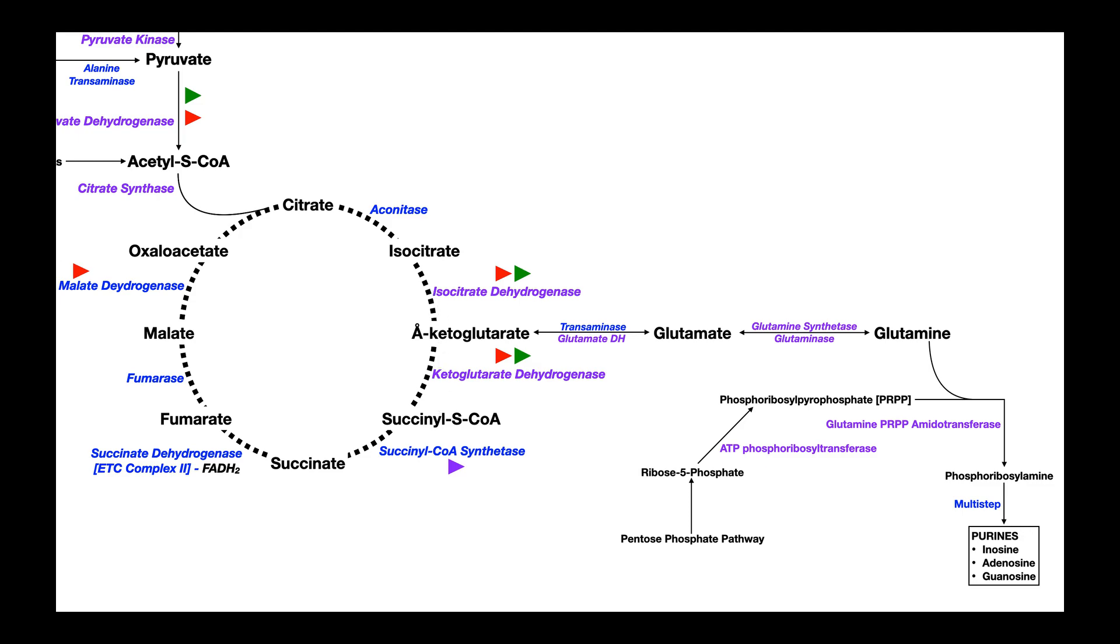Now let's look at pyrimidine biosynthesis. Here's oxaloacetate. When we have a surplus of intermediates in the citric acid cycle, we'll have some extra oxaloacetate. There's an enzyme called aspartate transaminase that can convert some of this oxaloacetate into the amino acid aspartate. Aspartate will be used in pyrimidine biosynthesis. Additionally, we're going to use ammonia.